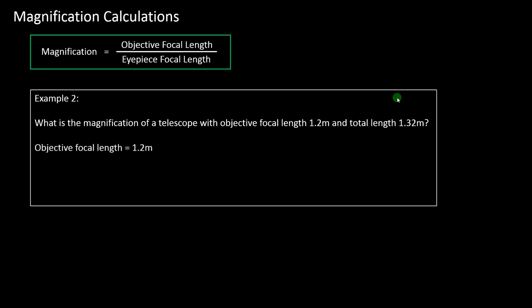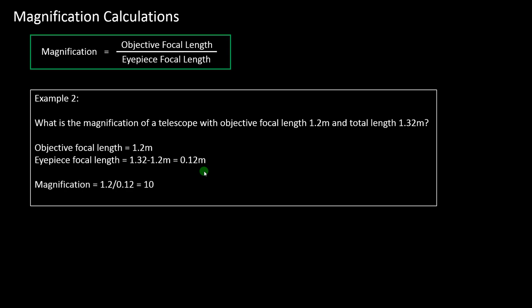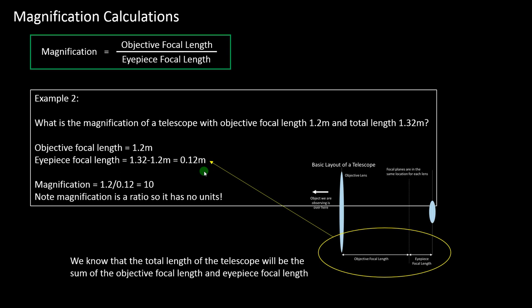The trick here is we have the objective focal length but haven't been directly told the eyepiece focal length. We need to remember that the eyepiece focal length plus the objective focal length equals the total length of the telescope. So the eyepiece focal length is the total length minus the objective focal length. This is shown in the original diagram — the objective focal length plus the eyepiece focal length is the total length from one lens to the other. Then just put the numbers into the formula.